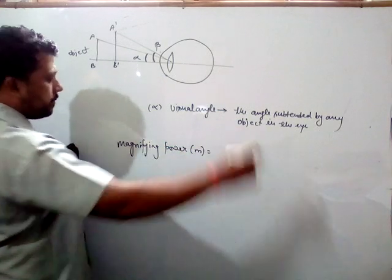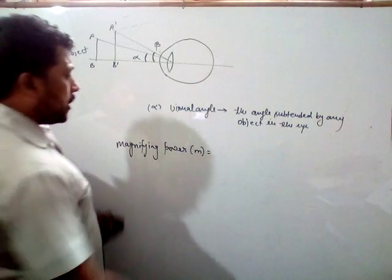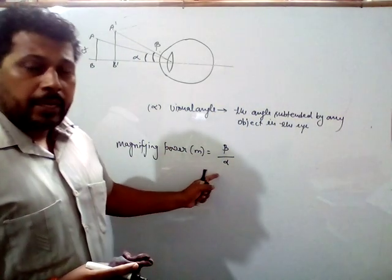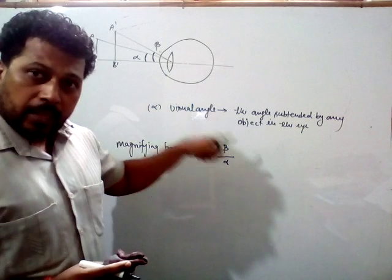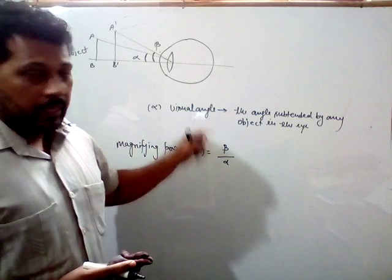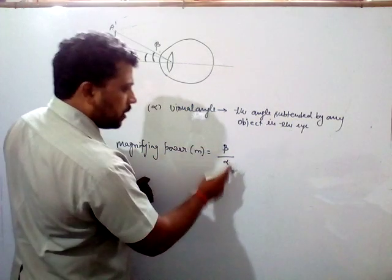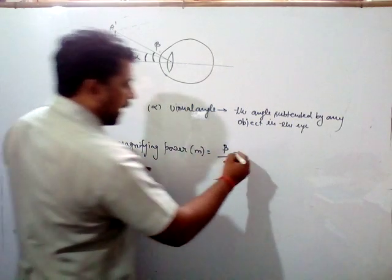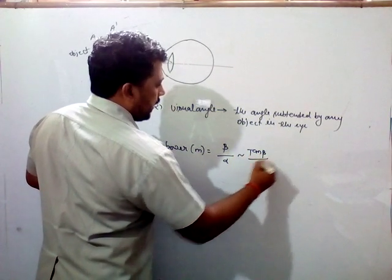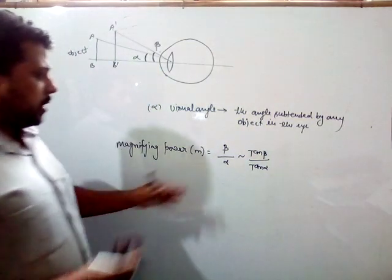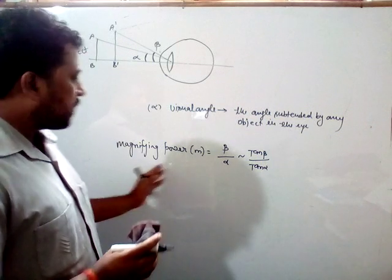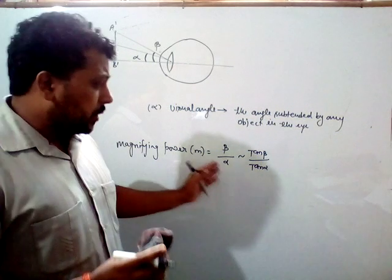Magnifying power, noted by M, is equal to the ratio of the angle subtended by the image in the eye and the angle subtended by the object in the eye — that is beta upon alpha. For small angles, this can also be written as tan beta upon tan alpha.